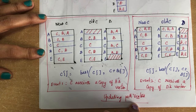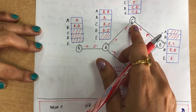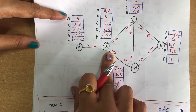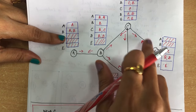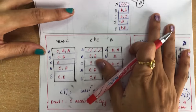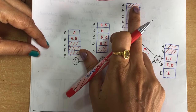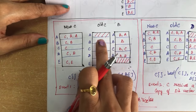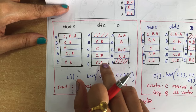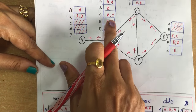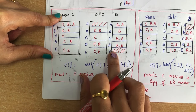Next we will see how to update the path vectors. After creating initial path vectors, all the path vectors are circulated and sent to the nearest neighbors. We will see how C receives a copy from B and a copy from E, and how it updates its own path vector. The old path vector of C has: nil for A, C B for B, C itself for C, C D for D, and C E for E. Now C is receiving the path vector from B.